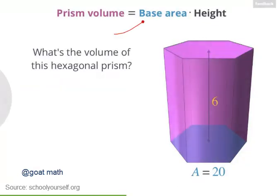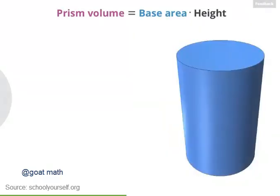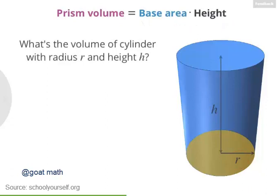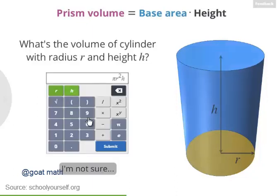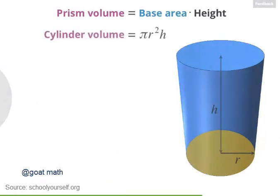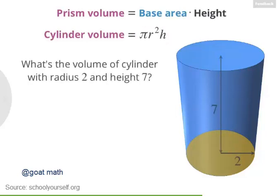This formula of base area times height even works when the base has a curved shape, like in a cylinder. A cylinder is basically a prism whose base is a circle. Suppose the height of this cylinder is h and the base has a radius of r. The volume of a cylinder equals pi times its radius squared times its height. For example, the volume of a cylinder with a radius of 2 and a height of 7 is pi times 4 times 7, or 28 pi.